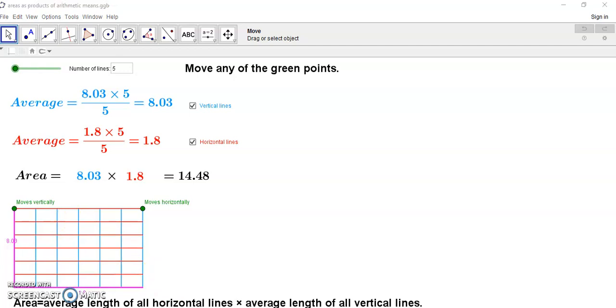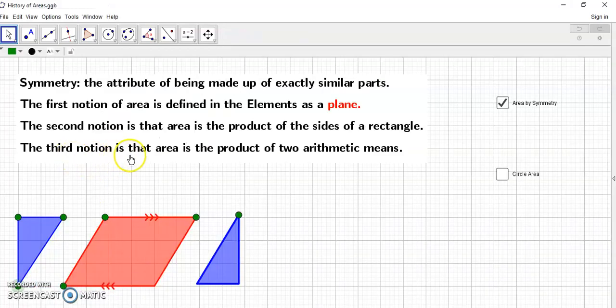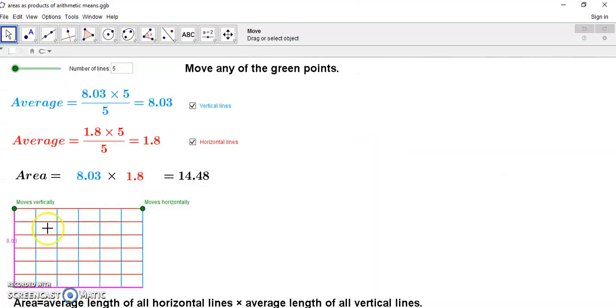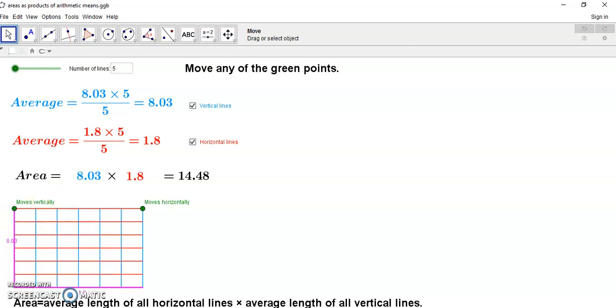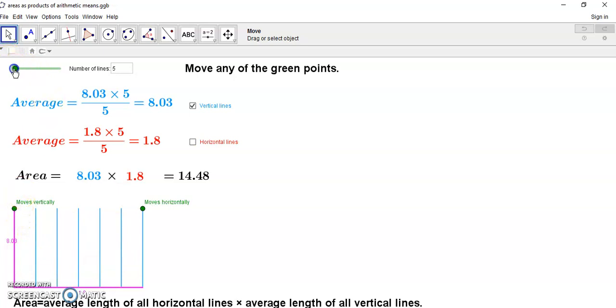Now what you have to bear in mind here is that the next notion which is that the area is a product of two arithmetic means says basically this that it doesn't matter how many vertical lines you have in here and how many horizontal lines